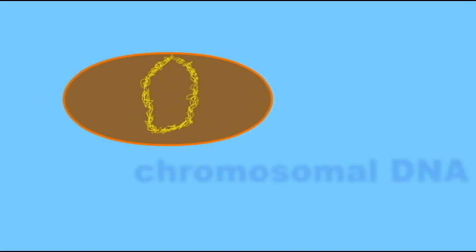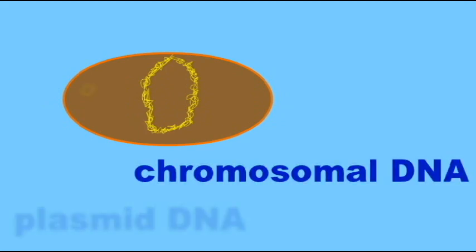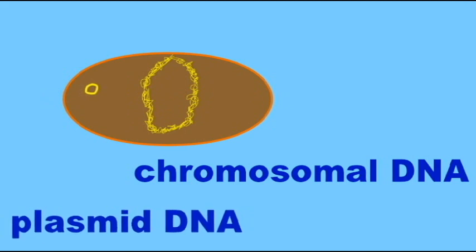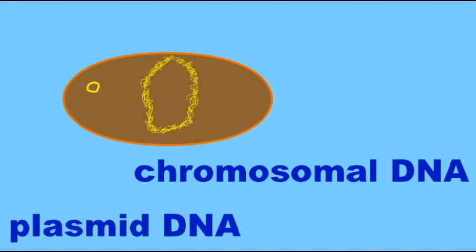In addition to the bacterial chromosome, bacteria may possess small loops of extra-chromosomal DNA known as plasmids.